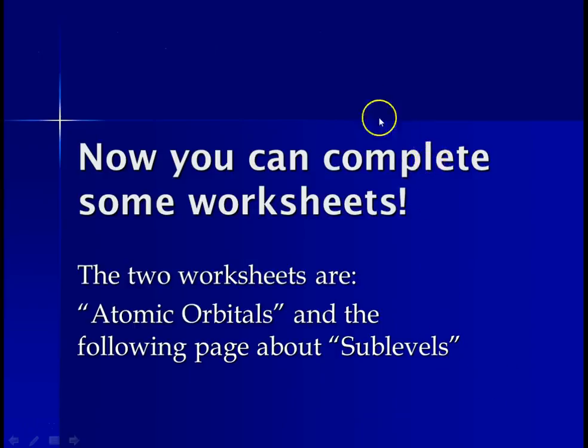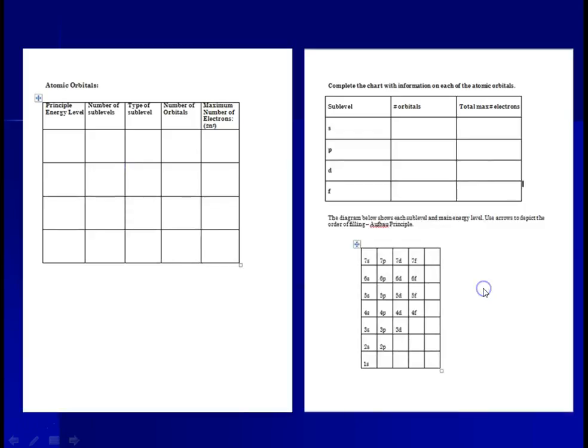Now we can complete some worksheets. The two worksheets that I am having you do are the atomic orbital worksheet and the following page about sublevels. And just so you're not confused, the two worksheets that I would like you to try to complete are this one, the atomic orbital one, and this one, complete the information. For this one, you're going to just be filling out these various things using your notes that I've just given you.